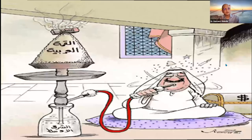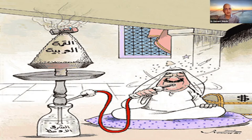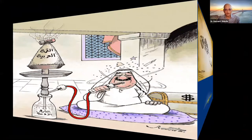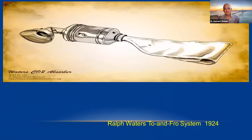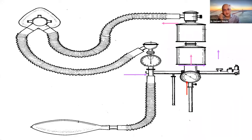Imagine a man enjoying a hookah — the humidifier, the reservoir, the tube. If you imagine him to be a patient, the tube becomes the endotracheal tube, the circuit becomes the breathing circuit, and the whole hookah becomes the anesthesia machine. The earliest anesthesia machine was developed by Ralph Waters in 1924, who invented a non-rebreathing valve, a CO2 absorber, and a reservoir bag. He passed away in 1979.